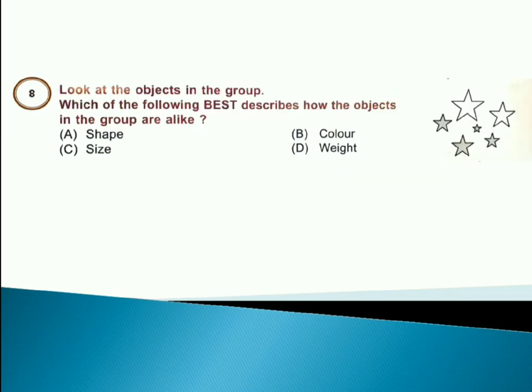Look at the objects in the group. Which of the following best describes how the objects in the group are alike? Answer is option A. They are of same shape, that is star shape.